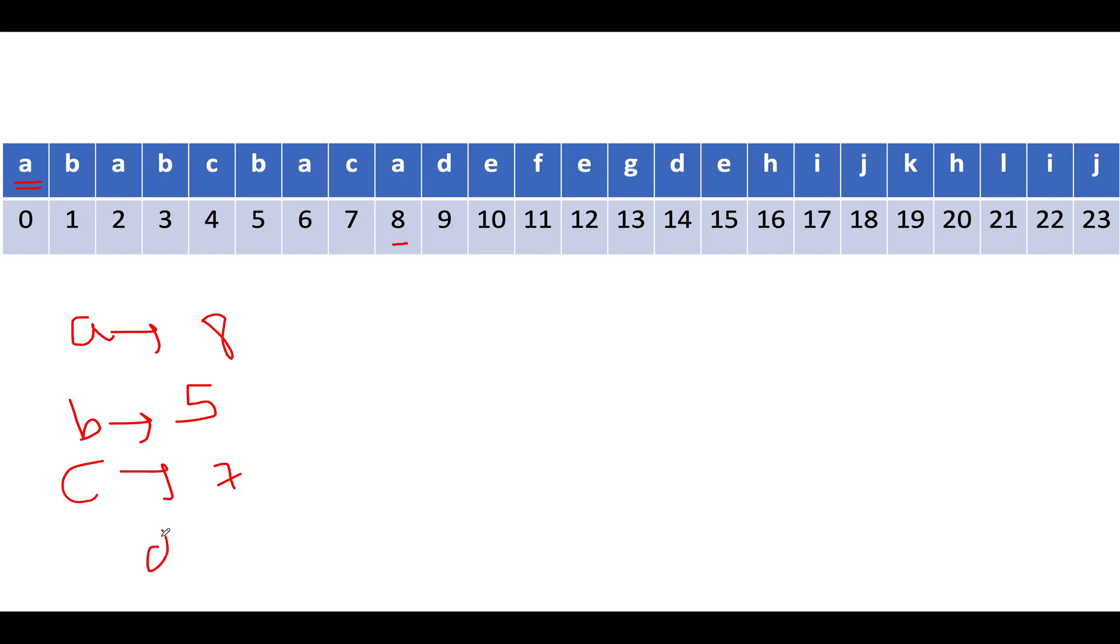What is the last index up till which 'b' occurs? 'b' occurs up till 5. 'c' occurs up till 7, 'd' occurs up till 14, 'e' occurs up till 15.